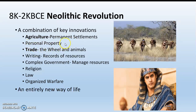We also have the introduction of personal property. Now that we have these big houses built next to our farms, we have room to store things — my things versus your things. We've also got trade: one community trading with another civilization. The two big things that make trade grow really quickly are the invention of the wheel and the domestication of animals like horses that can pull wagons.